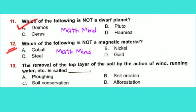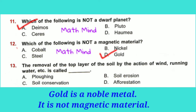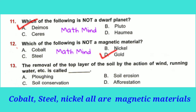Question No. 12: Which of the following is not a magnetic material? Option D is correct: Gold. Gold is a noble metal. Cobalt, steel, and nickel are all magnetic materials.